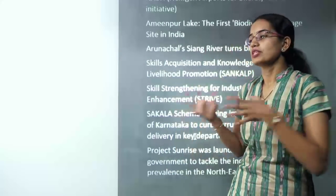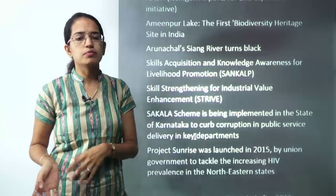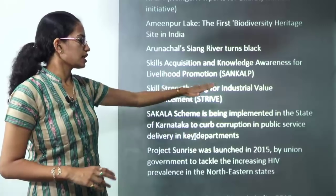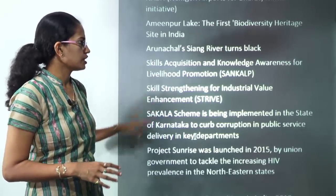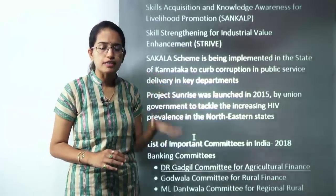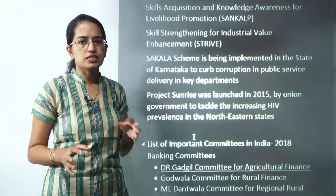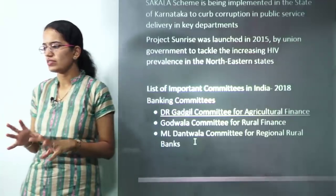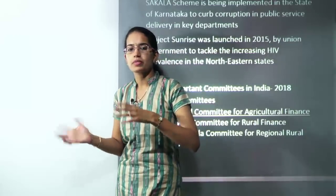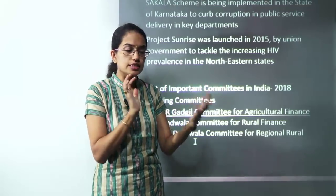These environment-related questions are important not only for GS Paper 1 but also for GS Paper 2 where you can have passages related to environment and recent issues. The next are some skill schemes — Sankalp, Strive, and Sakala. Sankalp is skill acquisition for livelihood, Strive is strengthening for industrial values, and Sakala is done by Karnataka state for anti-corruption measures. Then you have Project Sunrise, which talks about tackling HIV incidences in northeast India. Those were some of the important highlights before we move to committees.